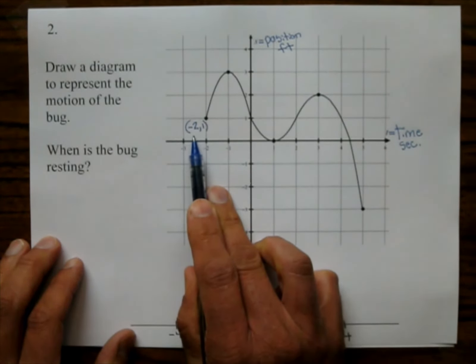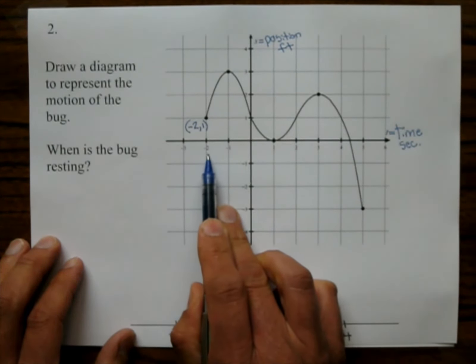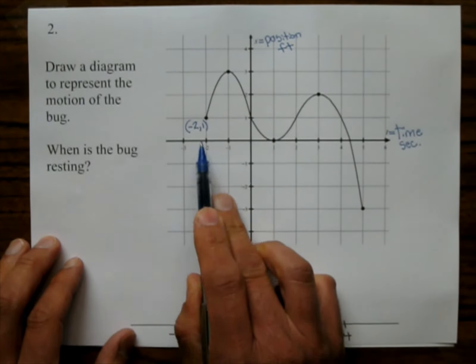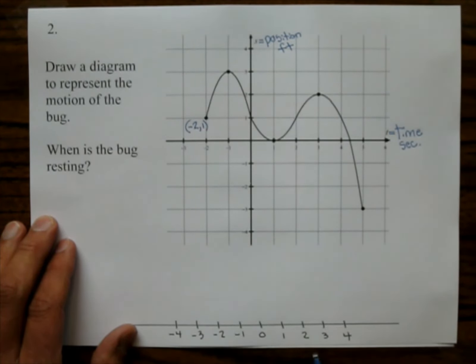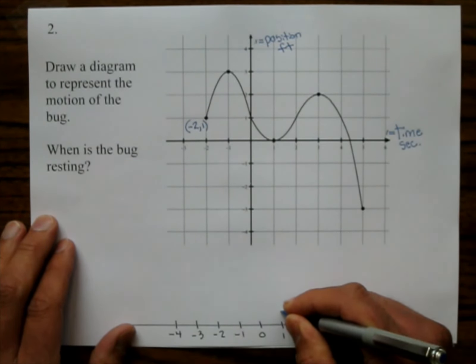Well, negative 2, it might not make sense to you that time could be negative, but negative 2 just means 2 minutes ago, or 2 seconds ago. So 2 seconds ago, the bug is at position 1. So I'll put a dot right there.